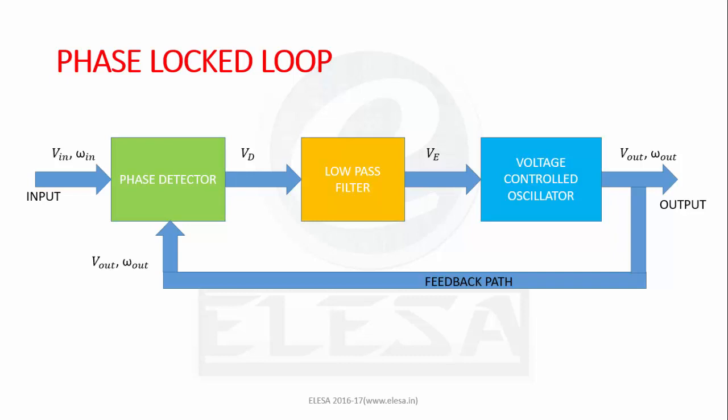Thus, we use ω_out output of PLL whenever we wish to recover a signal buried in noise and also in frequency related applications such as frequency synthesis and synchronization. Similarly, we use V_E as the output of PLL whenever we wish to detect changes in ω_in as in FM and FSK demodulation since the change in ω_in is ultimately reflected by change in V_E.